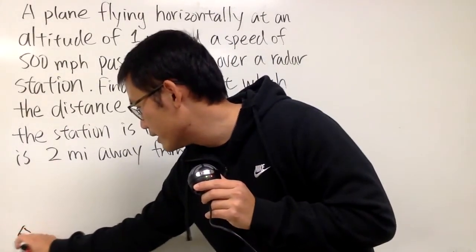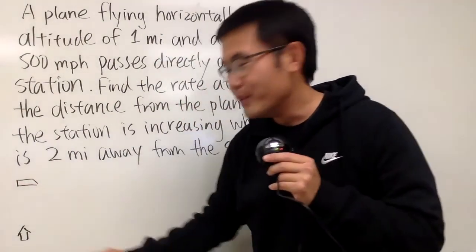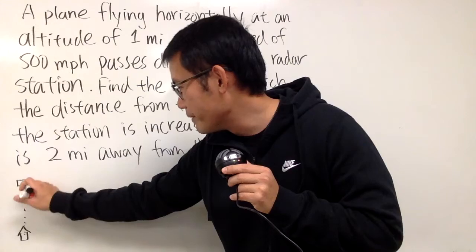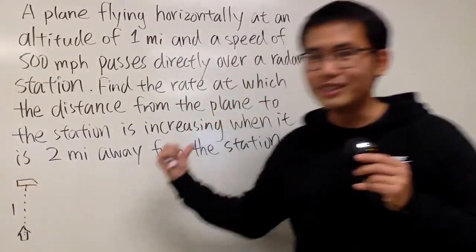We would like to find out the rate at which the distance from the plane to the station is increasing when it is 2 miles away from the station. Let me show you two pictures to illustrate the situation. Let's say this right here is my radar station, and here I have my airplane. It looks like this. We know that the distance from here to here is 1 because the altitude is equal to 1. And let's say the plane is going this way.